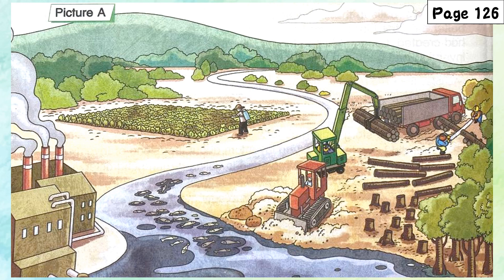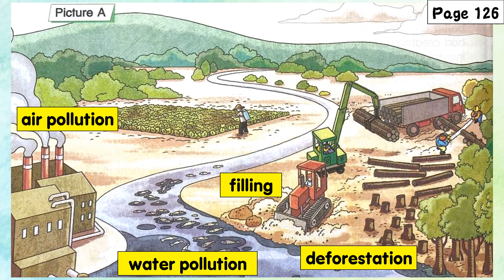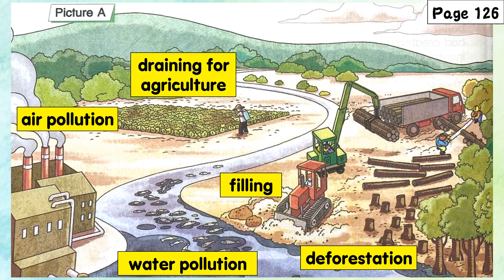These are wetlands. What has happened here? As we can see, the toxic waste from the factories causes air pollution and water pollution. The deforestation also causes damage to the wetlands. Other activities like filling up wetlands and draining for agriculture also cause damage to wetlands.